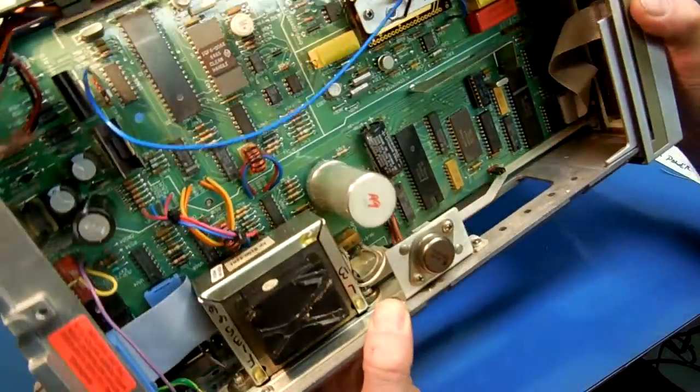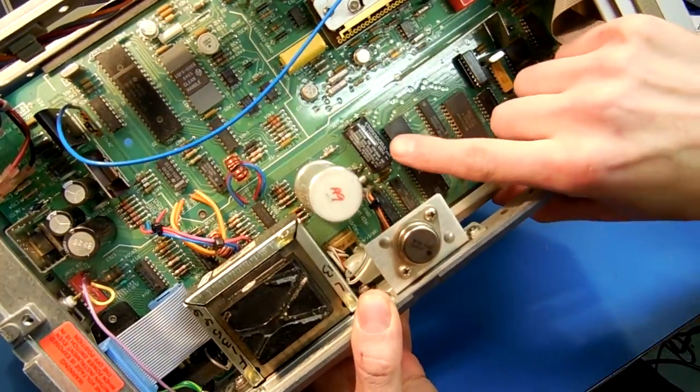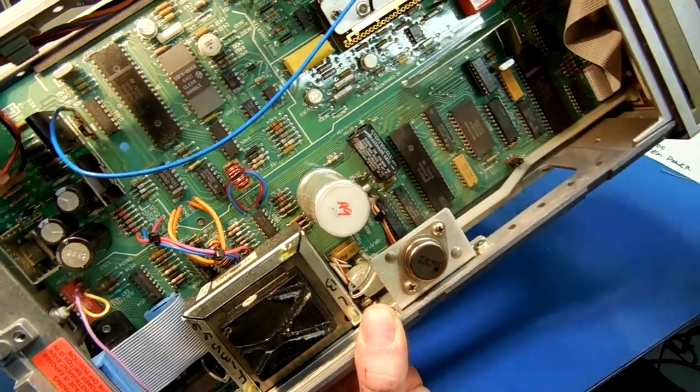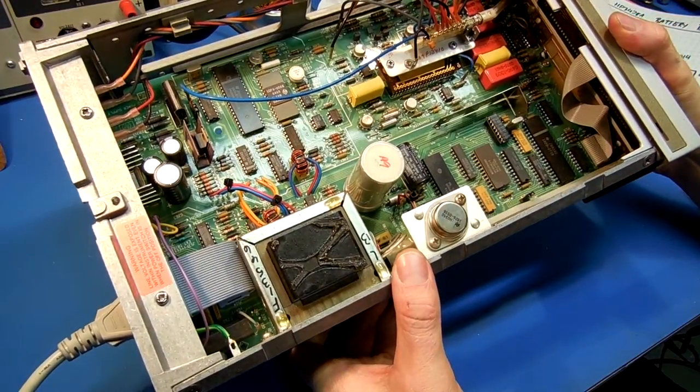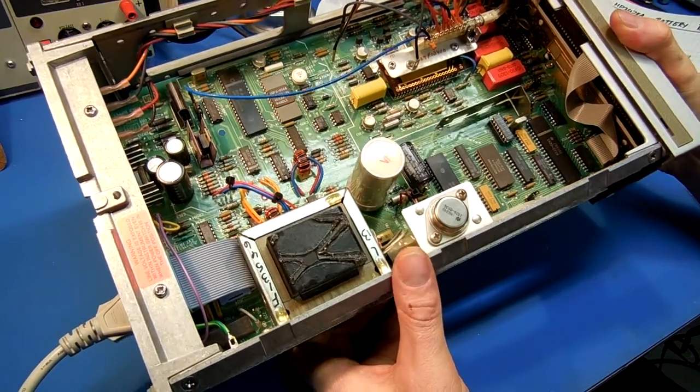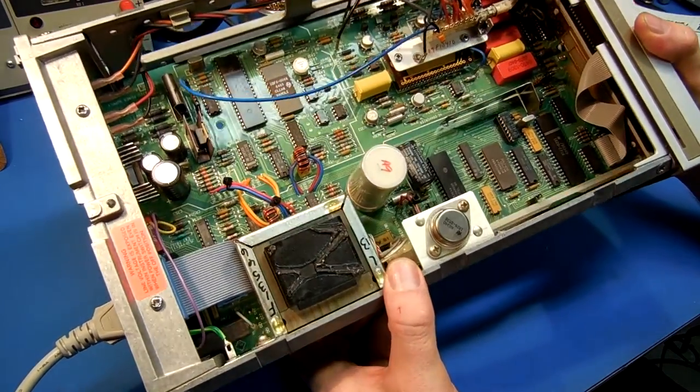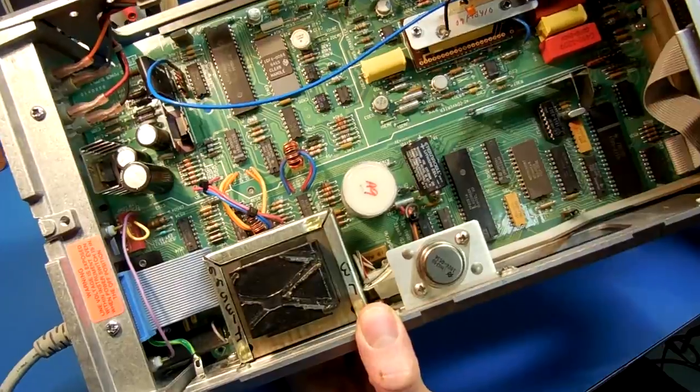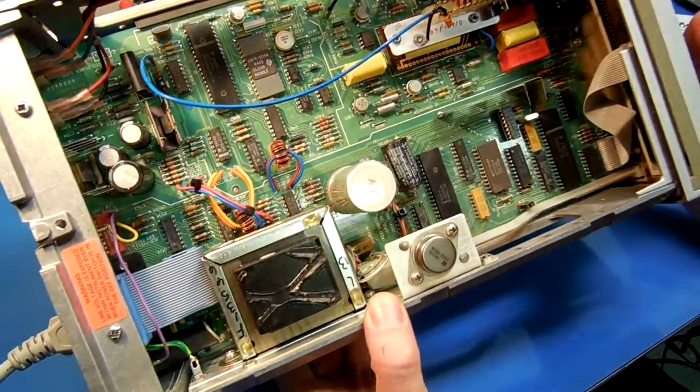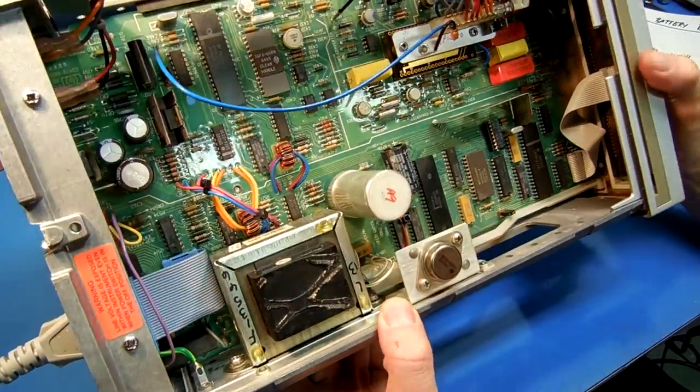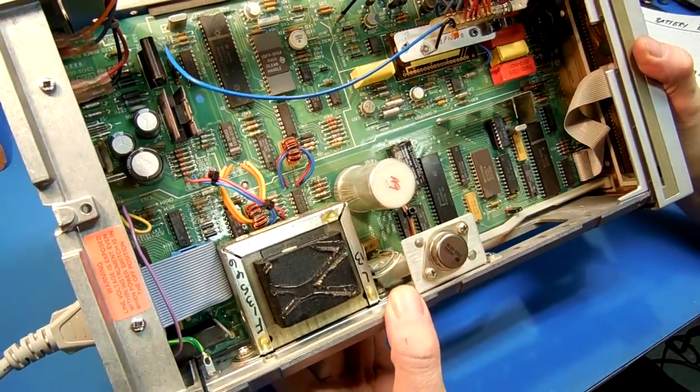This particular meter uses a 3 volt lithium battery to hold the calibration constants in a 5101 CMOS static ram. Most of these units are approaching 20 years old, so it's about time to replace the original lithium battery.